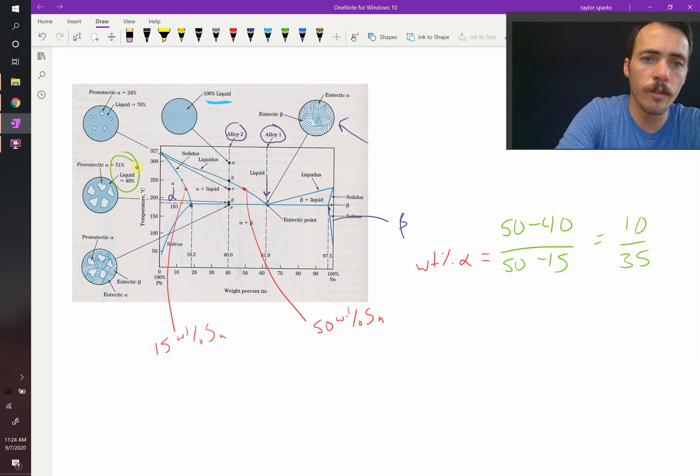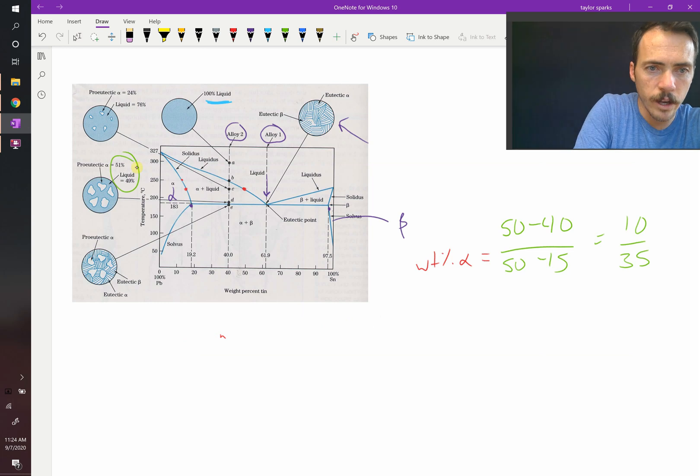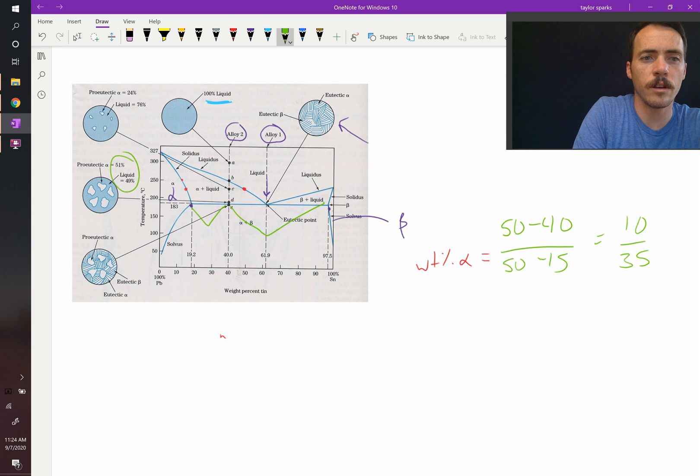What about just below that line? Just below that line things change. How does it change? Well, now you've got this length of line and this length of line. So which one is going to give us our weight percent alpha? It's going to be this length right there divided by the whole thing. So let's do it real quick.